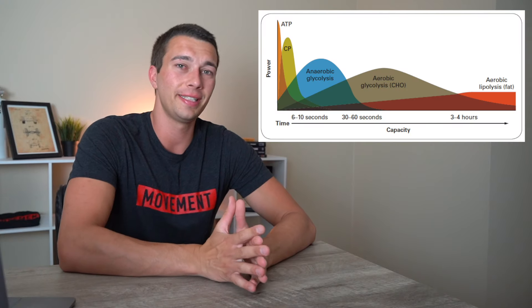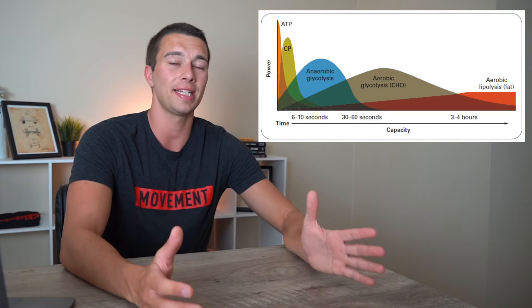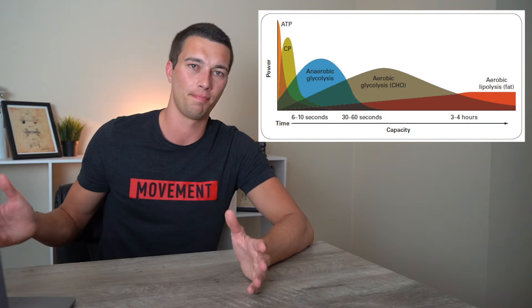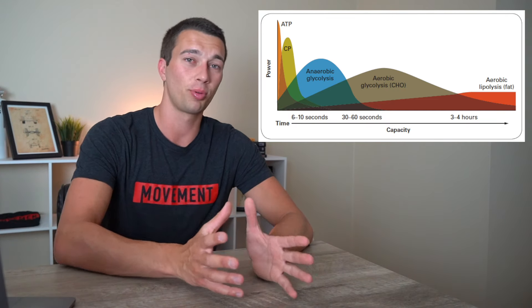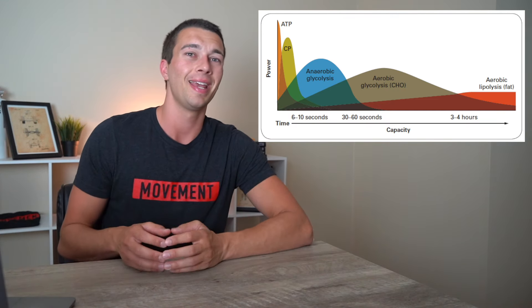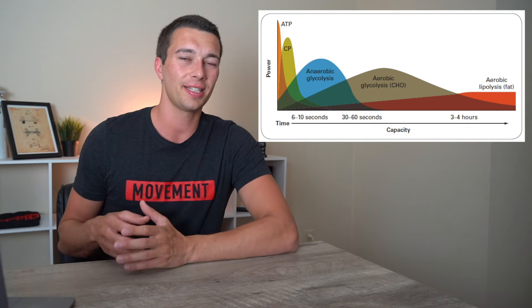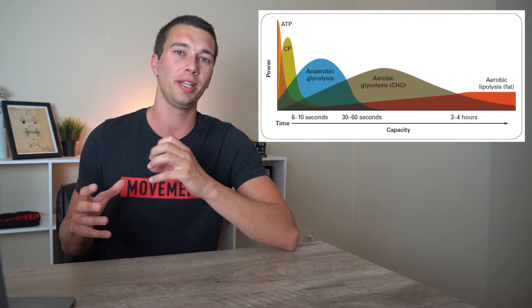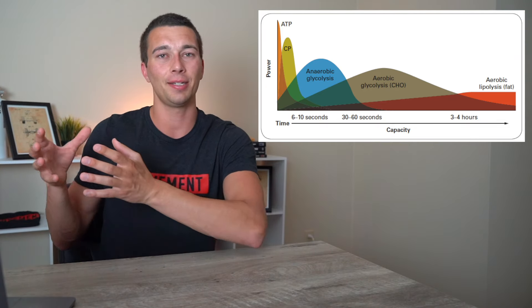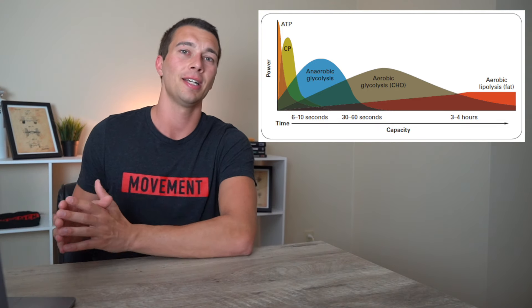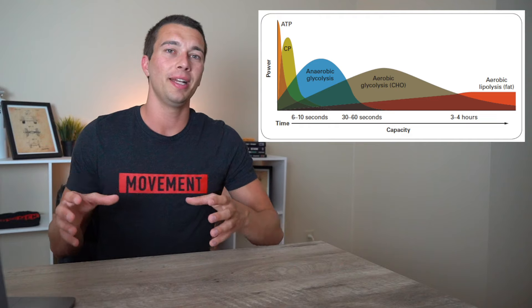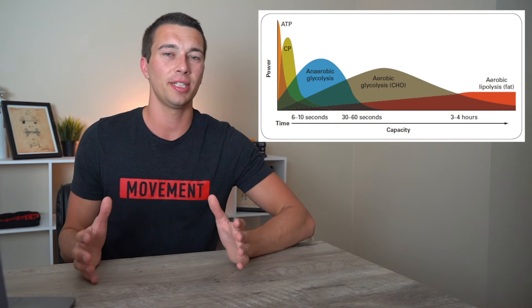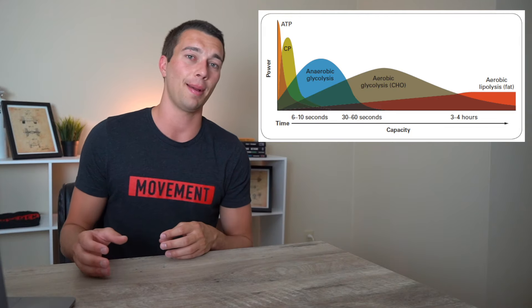This is going to be the primary energy system for most distance events, anywhere from running 800 meters to multiple miles, 10, 20 miles. We're primarily going to be relying on this system. As we get to really long events like a marathon, we may get into the point where we're 50-50 between aerobic metabolism of carbohydrates and metabolism of fats and proteins, primarily fats, but it really takes long events to get to that point. For most endurance athletes, we're going to be primarily using this carbohydrate metabolism.